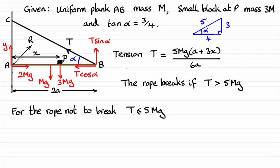So if you do make that substitution, this is what you're going to get. I can now divide throughout by 5mg. So we can cancel those out and then just multiply both sides by the 6a. And doing that, I therefore have the a plus 3x is less than or equal to 6a.